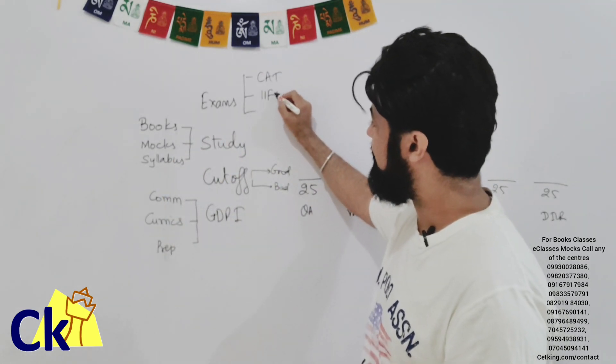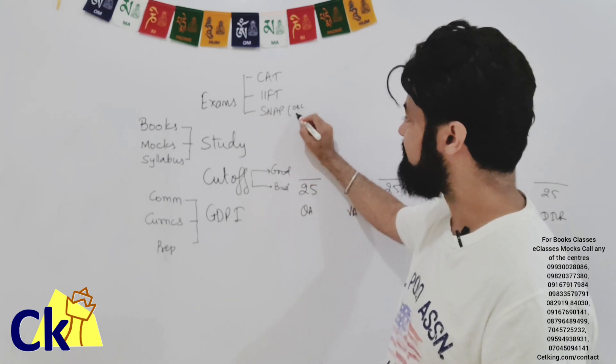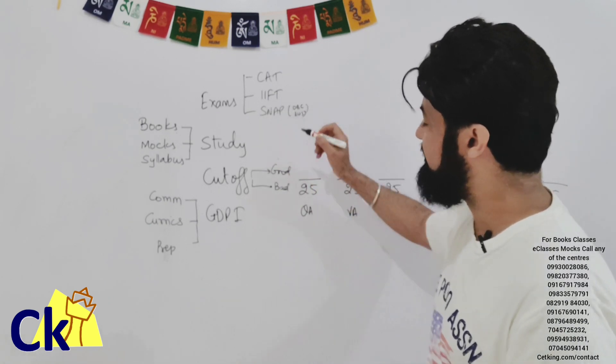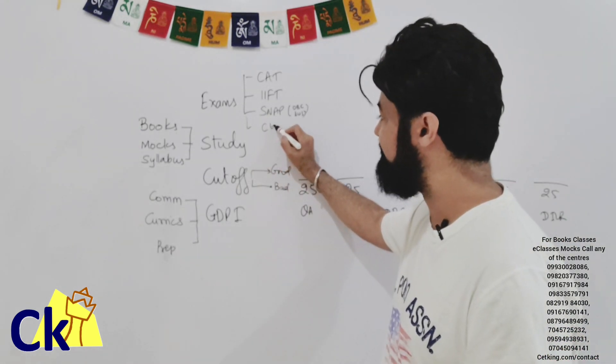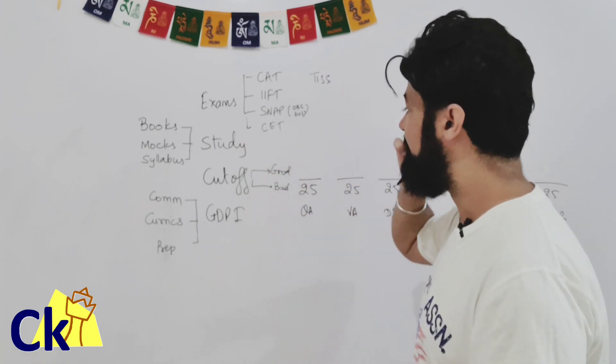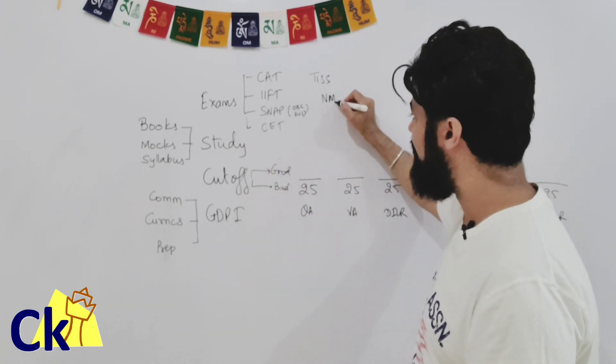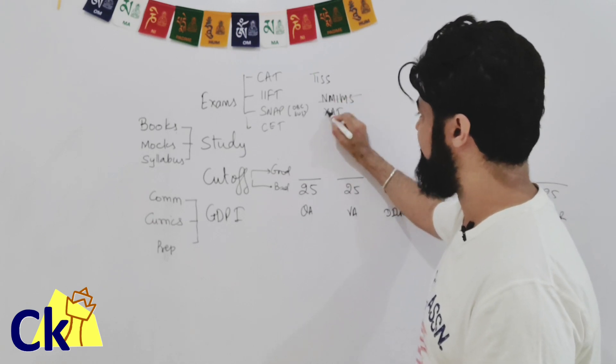So main is CAT exam. CAT, IIFT, SNAP - SNAP is not for OBC and EWS otherwise everybody can give. Maharashtra CET, if you are based in Maharashtra, CET is a very good option. TISS. All I'm trying to say is we are not going to focus on the exams where there is no reserved category.